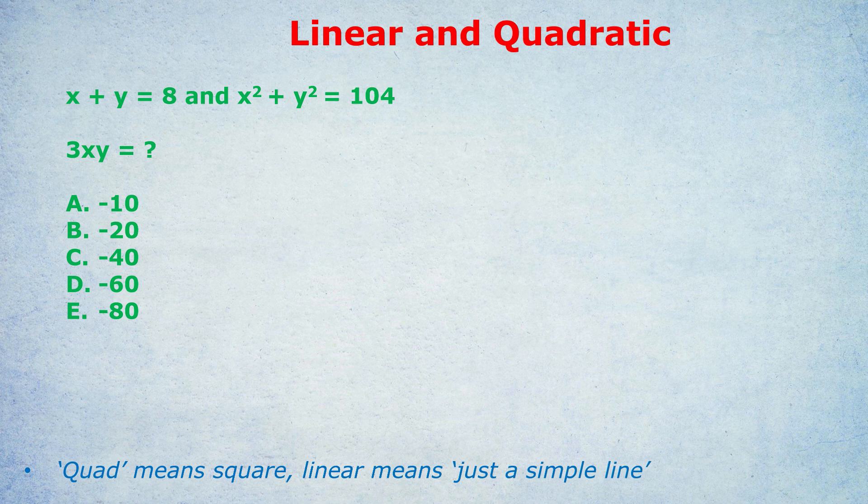I have a wonderful lesson and trick for you today that comes up at the medium and higher level of the GRE and GMAT, and it's about when they mix together linear and quadratic equations. Take the example you can see here. They're telling us that x plus y equals 8, and x squared plus y squared equals 104. What does 3xy equal?